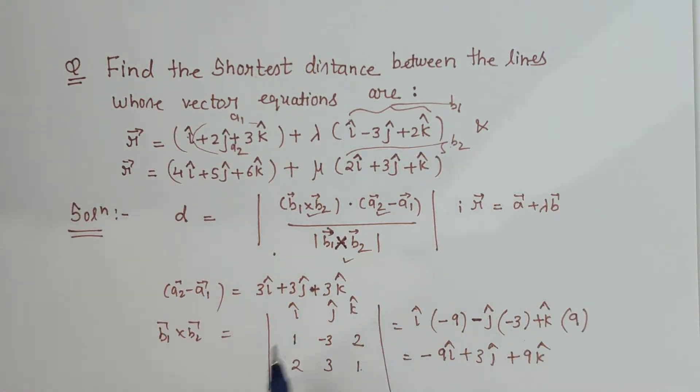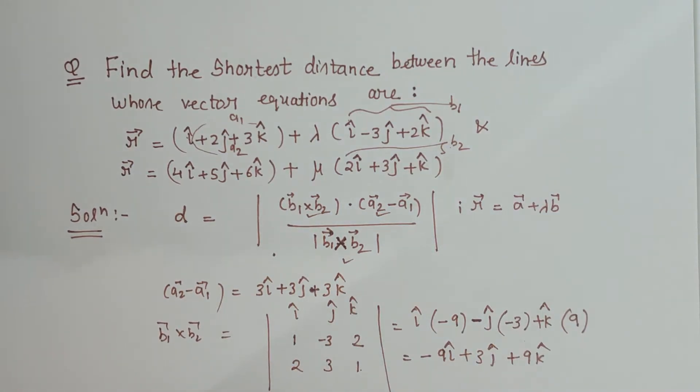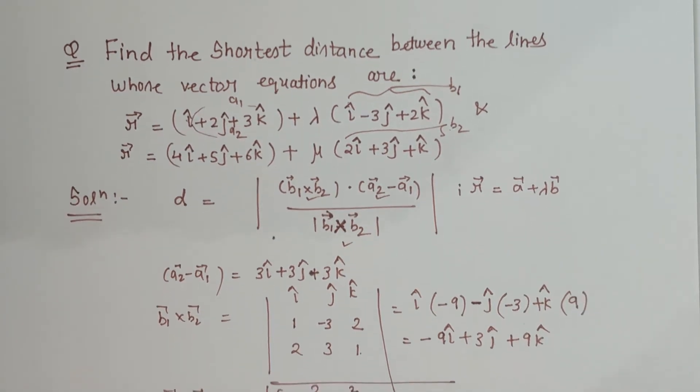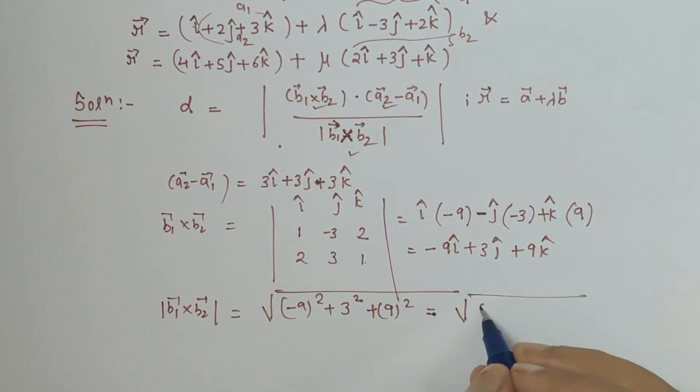Magnitude of b1 cross b2: in the formula we want its magnitude also, so let us find out the magnitude, which is nothing but square root of sum of the square of the scalar components. So this is minus 9 square plus 3 square plus 9 square which gives 81 plus 9 plus 81.